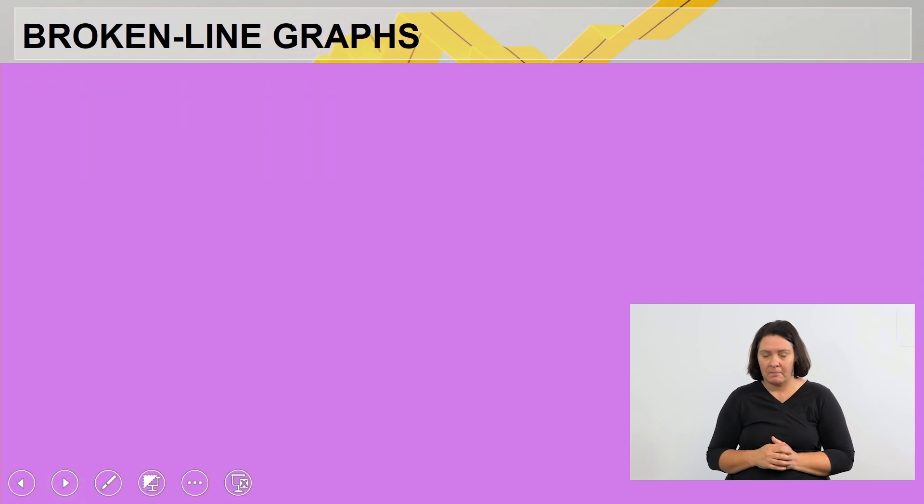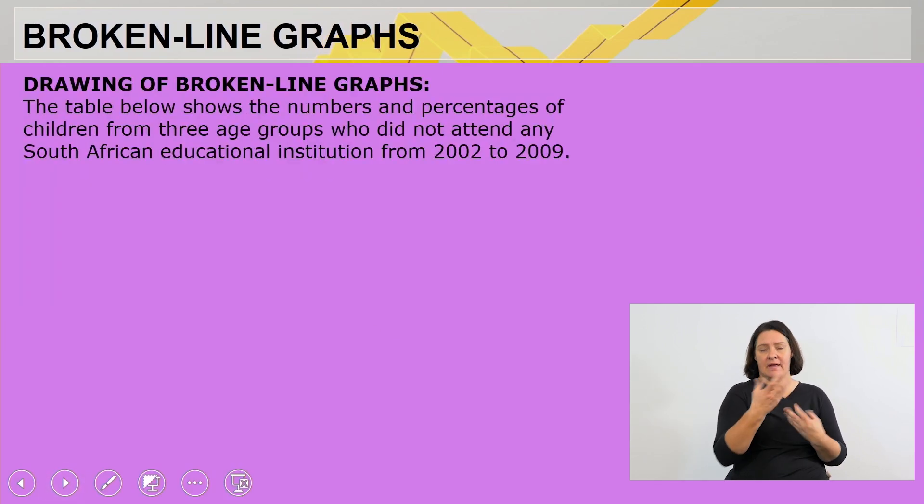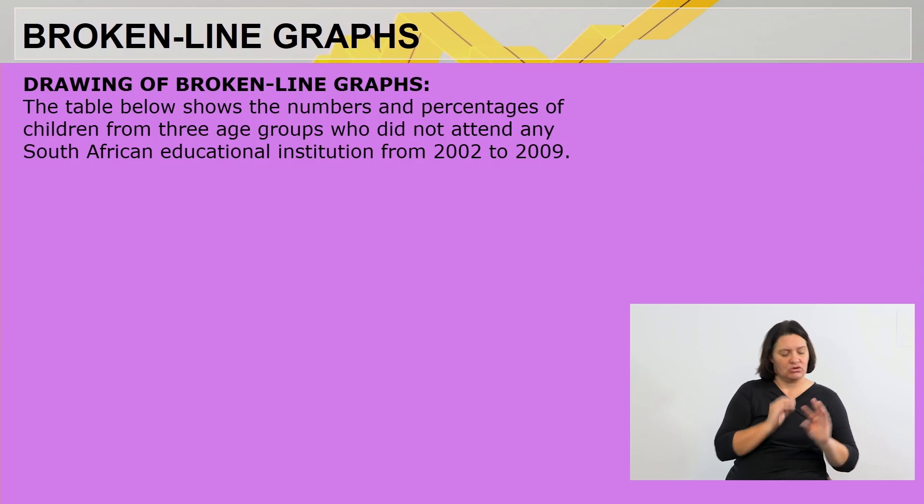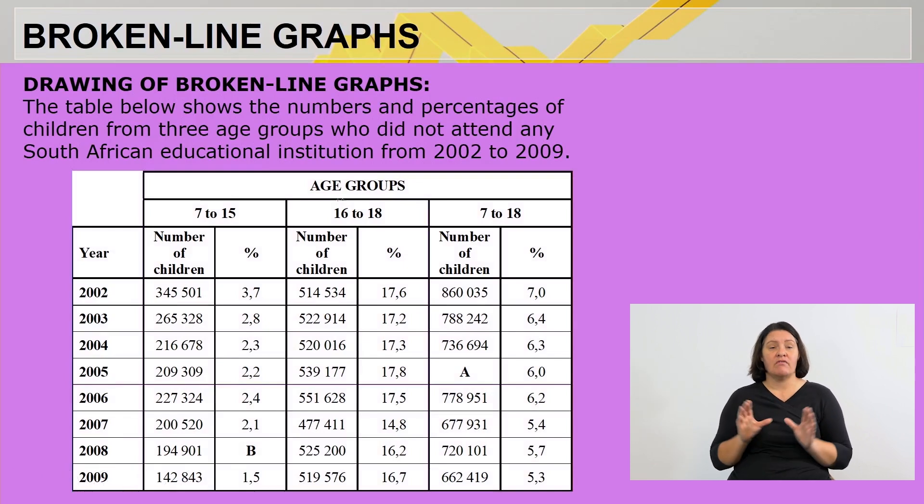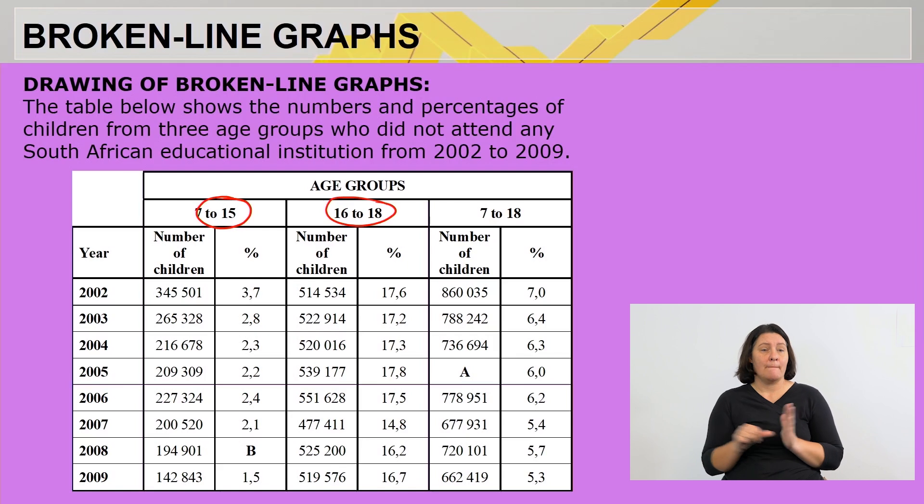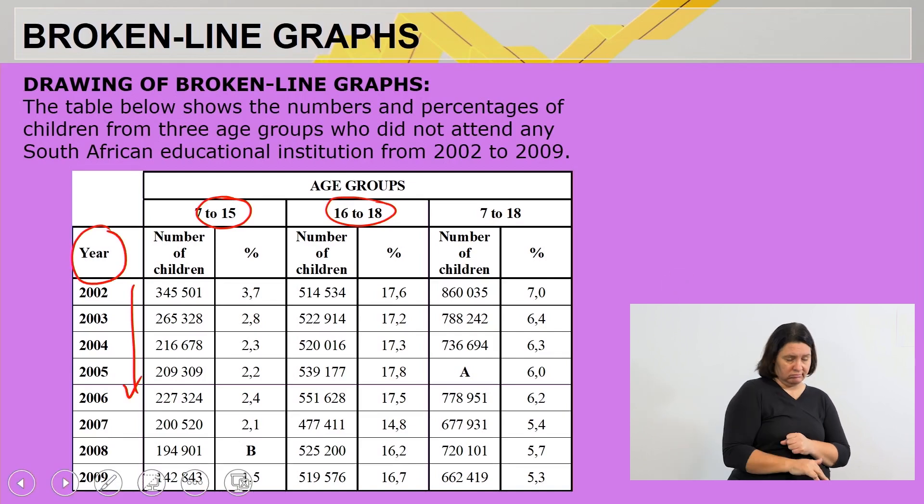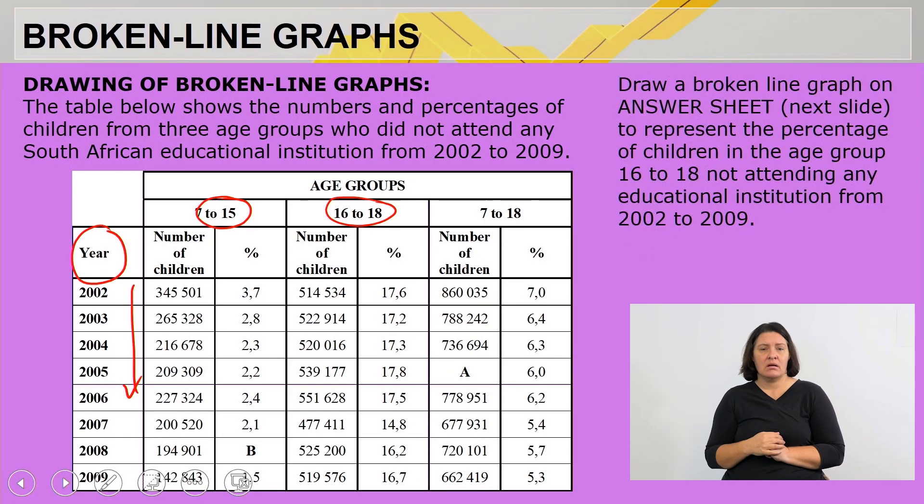The table below shows the number and percentages of children from three age groups who did not attend any South African educational institution from 2002 to 2009. There is your table. It is grouped according to the different age groups: 7 to 15, 16 to 18, and 7 to 18. Also important here, we have our year. Get familiar with the table first.